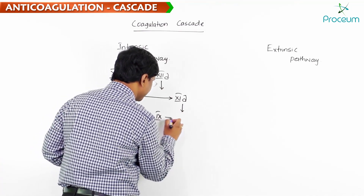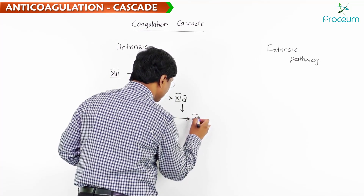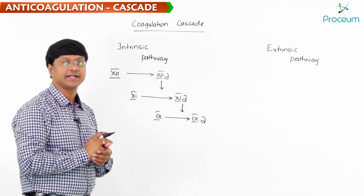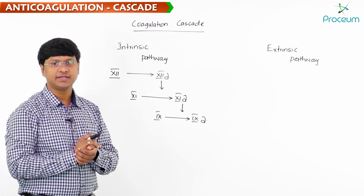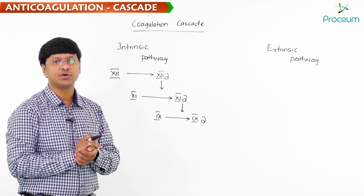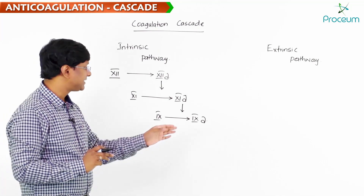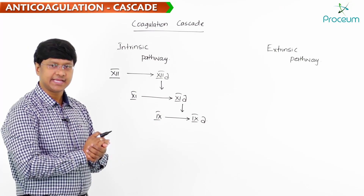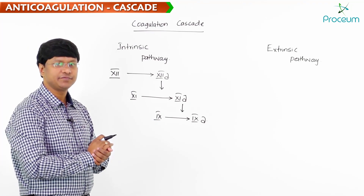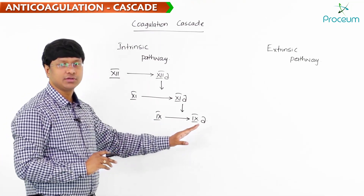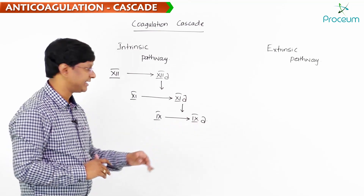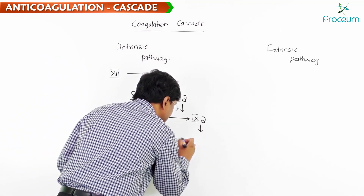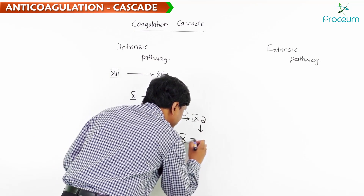Factor 11A acts on factor 9, wherein you get what is called the activated form, factor 9A. This activated form of 9A then acts on coagulation factor 10.